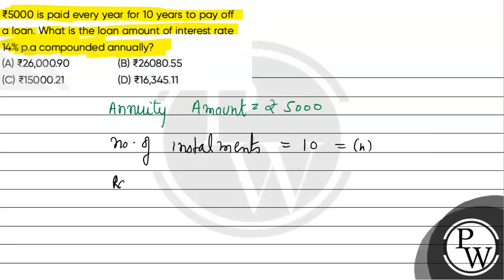And rate of interest is also given, which we represent as small i. That is 14%, which equals 14 divided by 100, so that becomes 0.14.